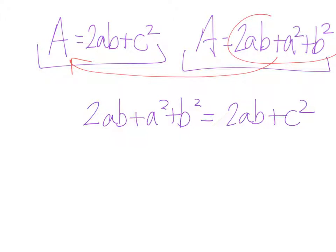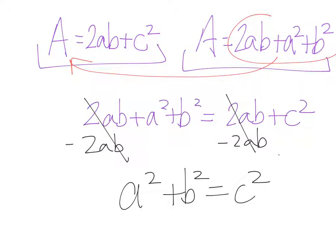Now, I have four triangles in one and the same four triangles in the other. So if I take away or subtract the two abs, which are the areas of the triangle, they're gone. And what I am left with is a squared plus b squared equals c squared. And what you have done is you have just proven the Pythagorean theorem.